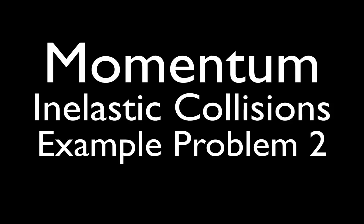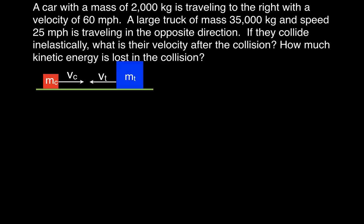In today's video we're going to go over another problem involving momentum and inelastic collisions. This is our second example. We have a car with a mass of 2,000 kilograms traveling to the right at 60 miles per hour, and a large 18-wheeler truck with a mass of 35,000 kilograms traveling to the left at 25 miles per hour. They collide inelastically, meaning they stick together.